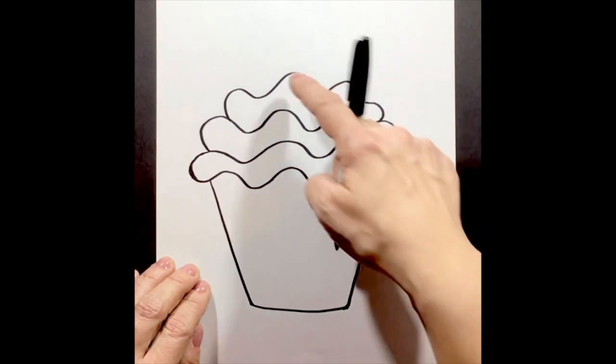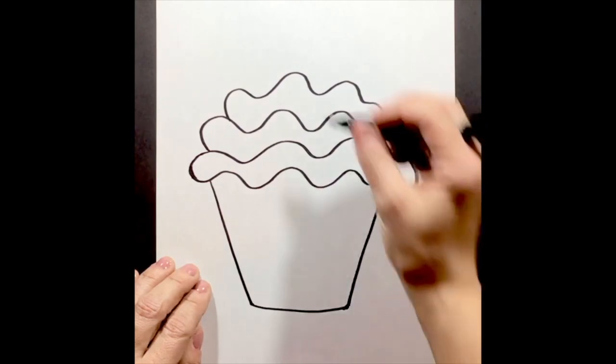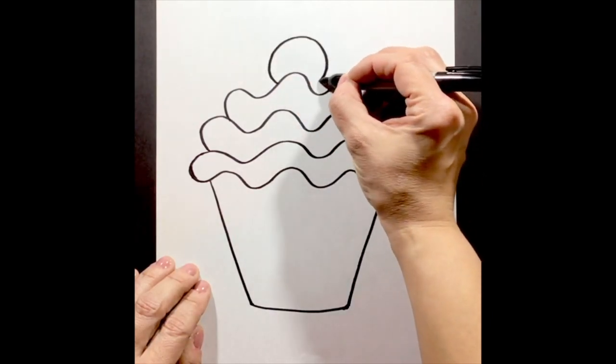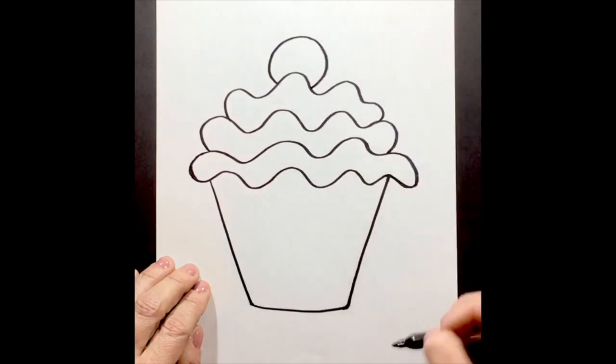And now for our step six, we're going to add a nice big cherry to the top of our cupcake. So we add a little circle to the top.